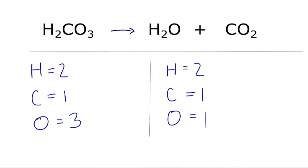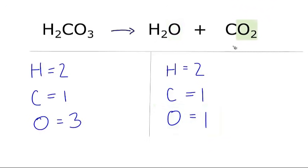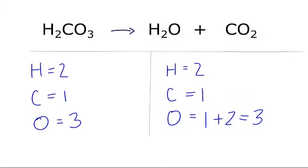In this equation, I've added everything up on each side. However, I made a common mistake. The reactant side is okay, but on the products, look at the oxygens. I've written the 1 oxygen we see in water, but I've forgotten about the 2 in the carbon dioxide. So really, it's 1 plus 2 equals 3. That's a very common error. Once I've corrected that, everything's balanced. Not too bad, right?